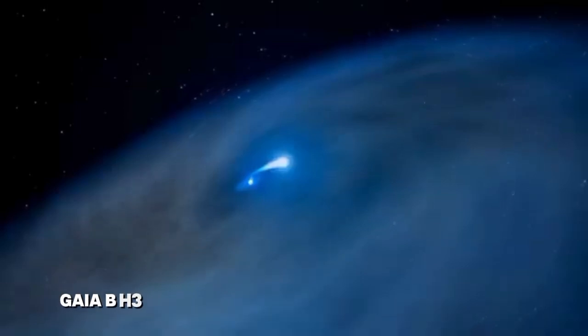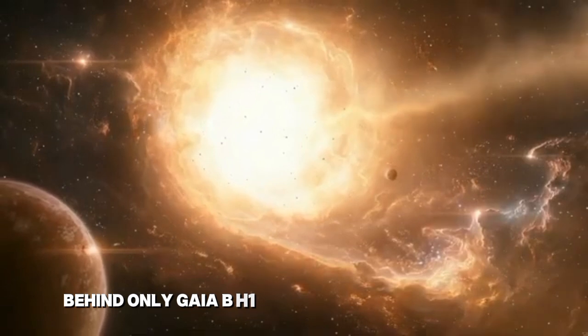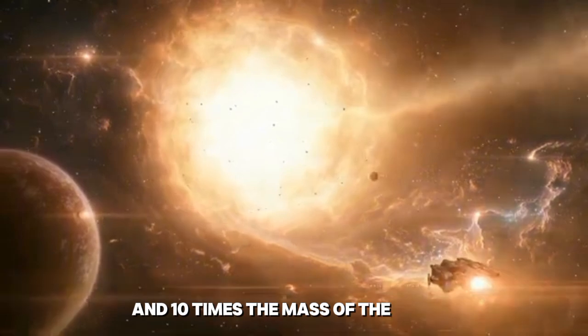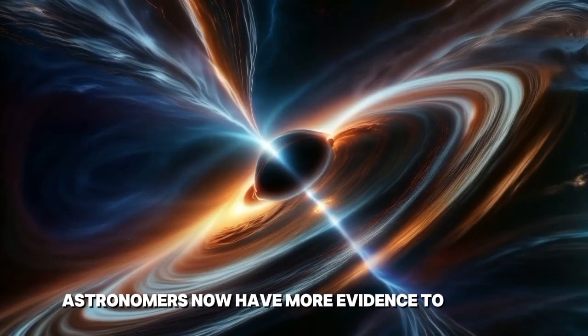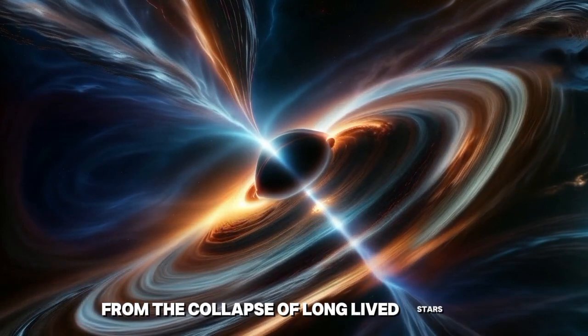Gaia BH-3 is the second closest black hole to Earth, behind only Gaia BH-1, which is 1,500 light-years away and 10 times the mass of the Sun. Astronomers now have more evidence to piece together how stellar black holes form from the collapse of long-lived stars.